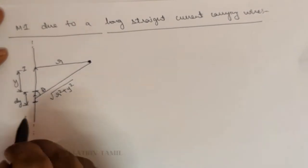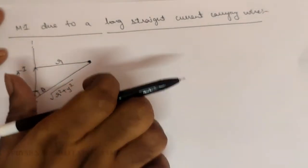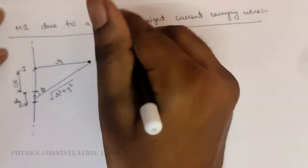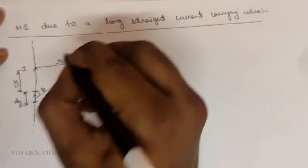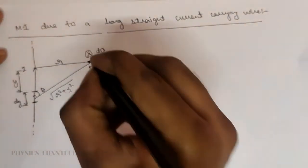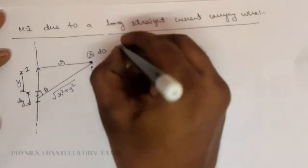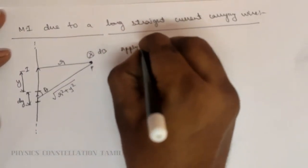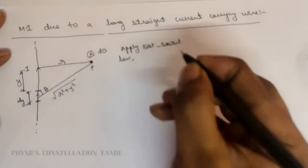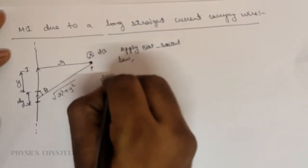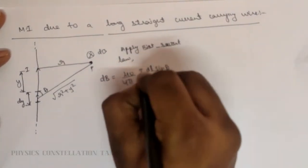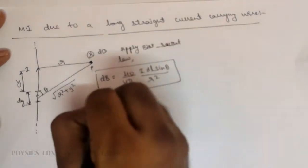Due to this current element, we calculate the magnetic induction at point P. Using the right-hand thumb rule, the fingers point into the paper, so the magnetic field is directed into the page. To calculate the magnetic induction at point P, we apply Biot-Savart Law, which states: dB = (μ₀/4π) · (I·dl·sinθ) / r². This is the basic formula.